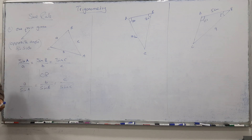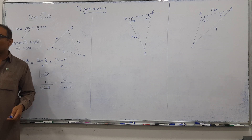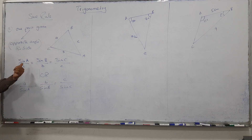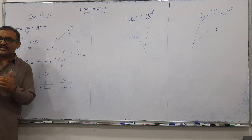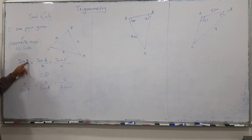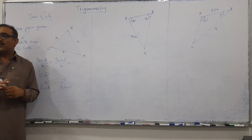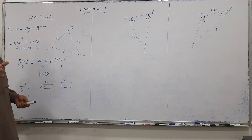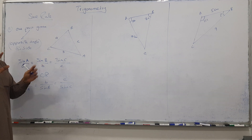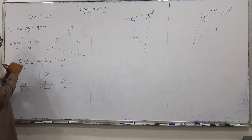Here's a useful tip: when the angle is unknown, use the form with the angle on top — that is, sin A over a. When the side is unknown, use the form with the side on top — that is, a over sin A. Using the right form saves one step in your working.